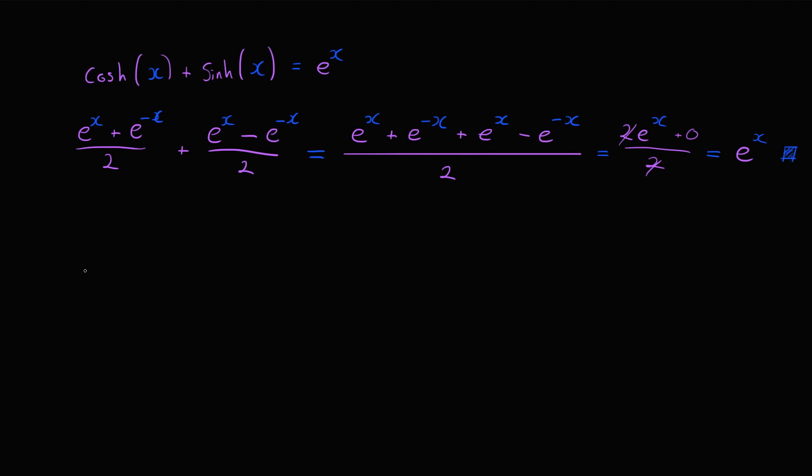The next identity might look a little bit more familiar. cosh squared of x minus sinh squared of x equals 1. Now, we could do this by just substituting our definitions, but we can also cheat a little bit. Since both of these terms are squared and are being subtracted from each other, we can use difference of squares to factor this. The first term is just going to be cosh plus sinh, and the second term is going to be cosh minus sinh.